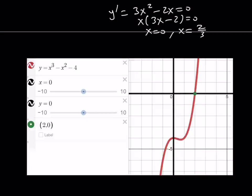So obviously, this graph has a maxima at 0 and minima or minimum at 2/3. But the critical part about this graph is that it only has one x-intercept, as you can see here.